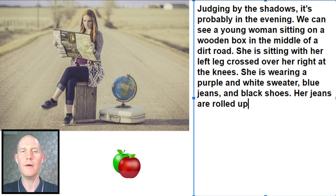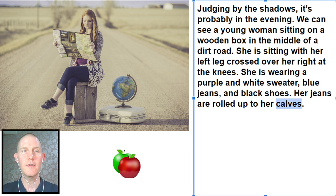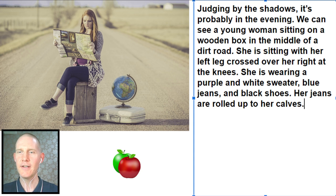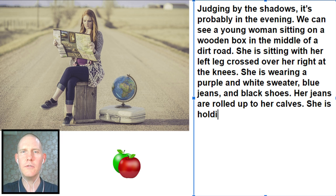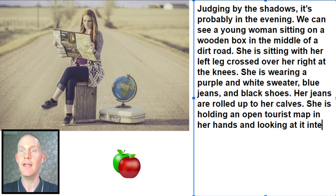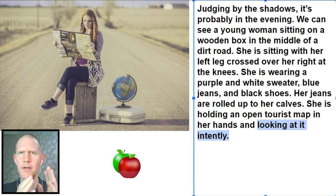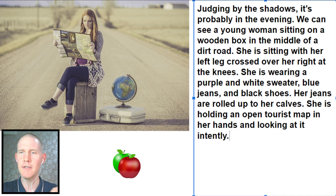She is sitting with her left leg crossed over her right, right at the knees. She is wearing a purple and white sweater, blue jeans, and black shoes. Her jeans are rolled up to her calves. Calves are the back part of your leg, the main muscle part — people that can jump really high usually have really strong calves. She is holding an open tourist map in her hands and looking at it intently. If we look at something intently, that means it has all our focus — we're not distracted, it has our attention.